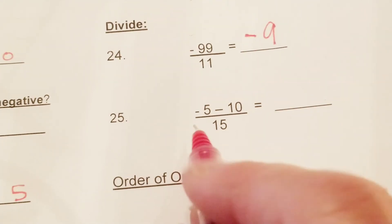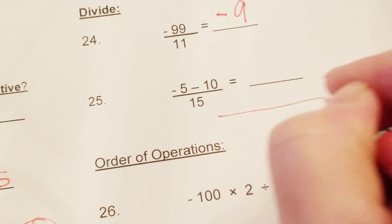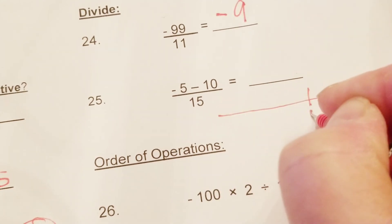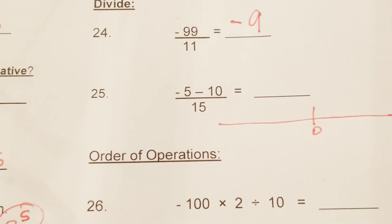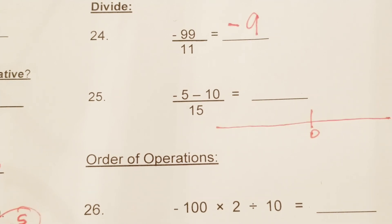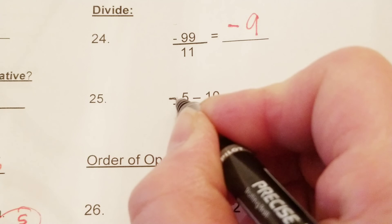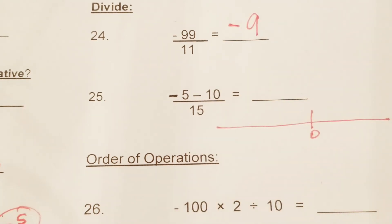Number 25: negative 5 minus 10 — let's solve the numerator first. Let's draw a number line. I always feel for you guys because in 7th grade this stuff didn't always come easy to me, so I never take for granted that it's just an easy problem. I look at it now and say 'oh easy,' but I sure didn't when I was your age.